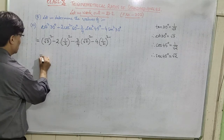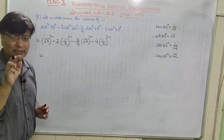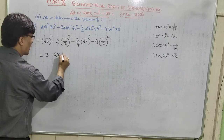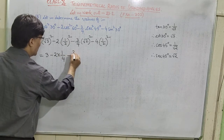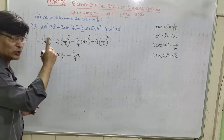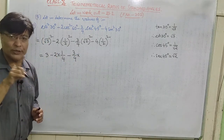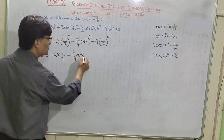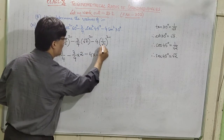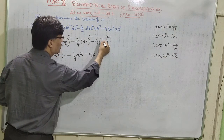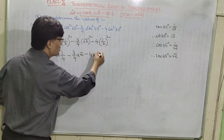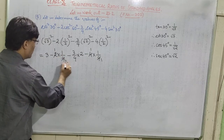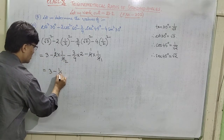Simplifying: √3 whole squared is 3. Minus 2 into (1/2)² is 2 into 1/4 which equals 1/2. Minus 3/4 into (√2)² is 3/4 into 2 which equals 3/2. Minus 4 into (1/2)² is 4 into 1/4 which equals 1. So the expression becomes 3 minus 1/2 minus 3/2 minus 1.